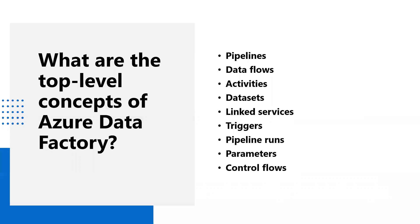What are data flows? Data flows are objects that you build visually in Data Factory which transform data at scale on back-end Spark services. We do not need to understand programming or Spark internals. We can just design our data transformation intent using graphs or spreadsheets. What are activities? Activities represent a processing step in a pipeline. For example, we can use a copy activity to copy data from one data store to another.